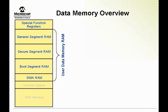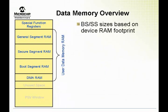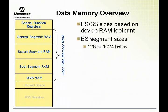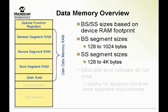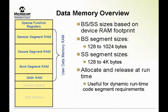Data memory overview: the size of the boot segment RAM and secure segment RAM are device dependent. When a boot segment allocates some RAM for itself, other segments will not be able to read the contents of those RAM locations. Since code execution flow is not always limited to the boot or secure segments, an option is provided so that the boot or secure segment may release its RAM for general usage at runtime. Conversely, the boot or secure segments may reclaim their RAM for protected use.